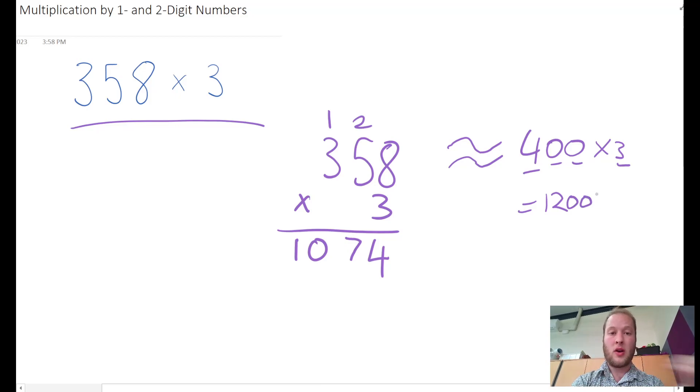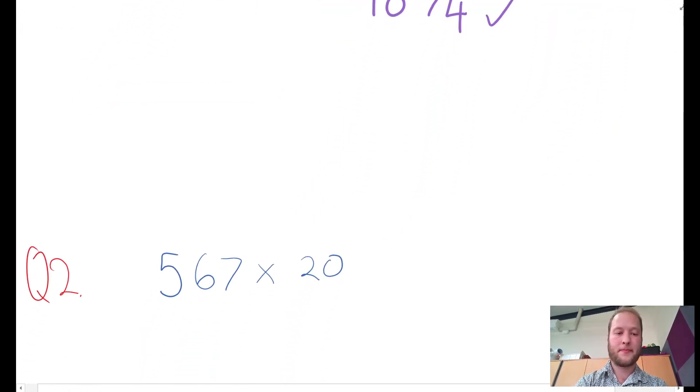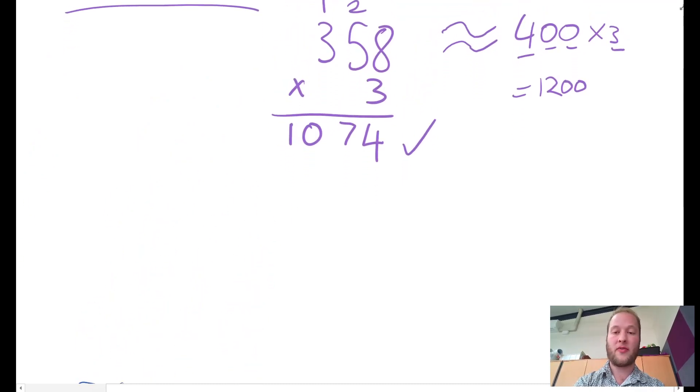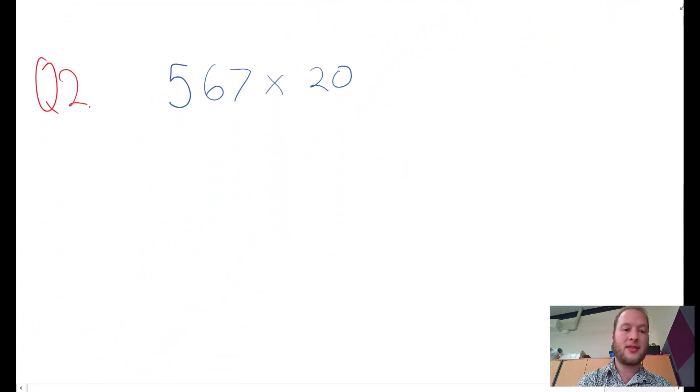Question 2: If you didn't understand what I just did with the estimation, here's how you can do it. I've got 567, I'm multiplying it by 20.